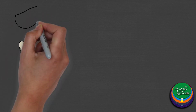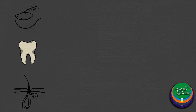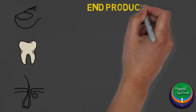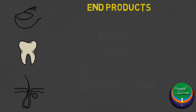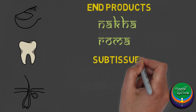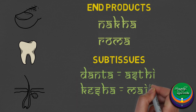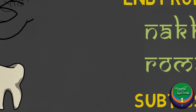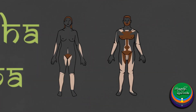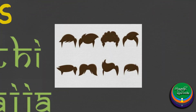Ayurveda also considers teeth, nails and hair as highly related to bones. According to Ashtanga Hridaya, Nakha and Roma are Mala of Asthi dhatu. Bhava Prakasha mentions that Danta is the Upadhatu of Asthi dhatu and Kesha as the Upadhatu of Majja dhatu.